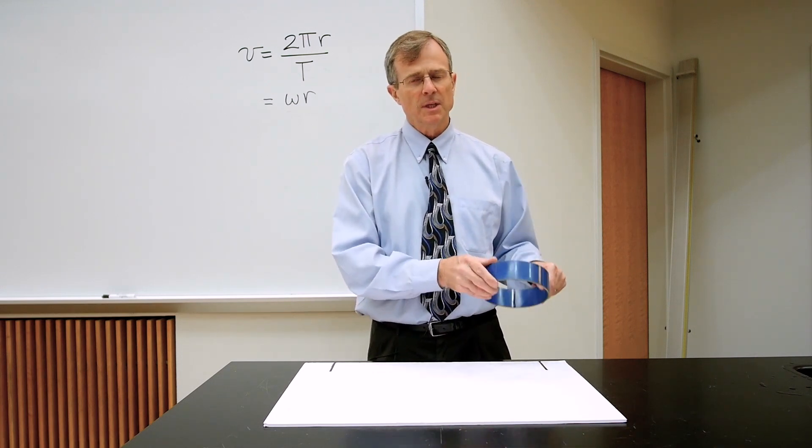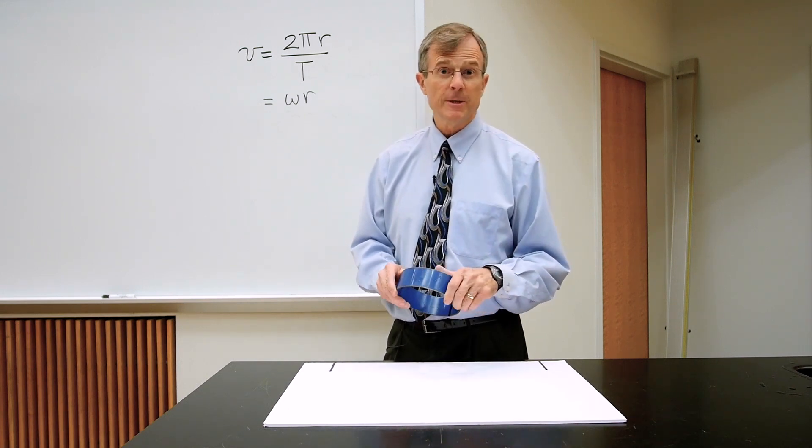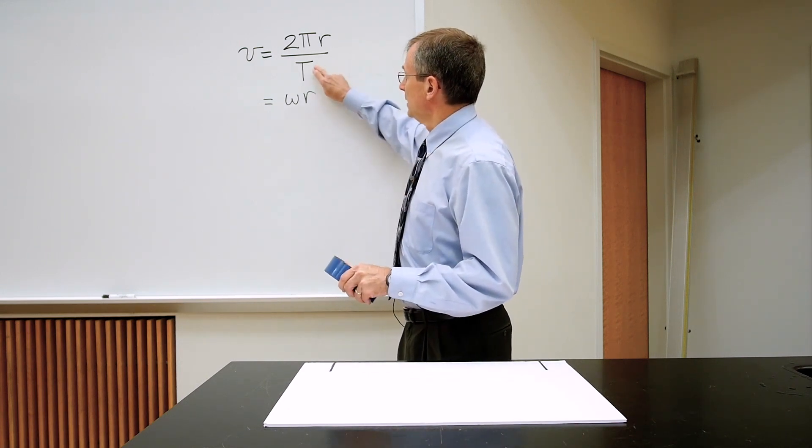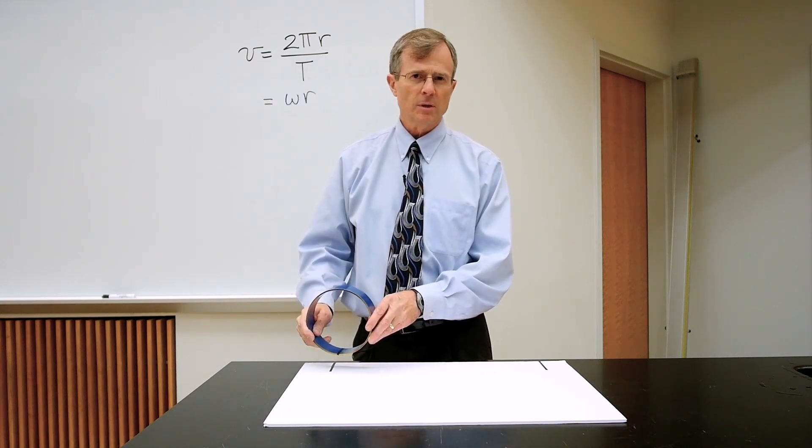So we've completed one rotation. The amount of time it takes for one complete rotation is called the period T. The distance traveled is equal to the circumference of the circle.